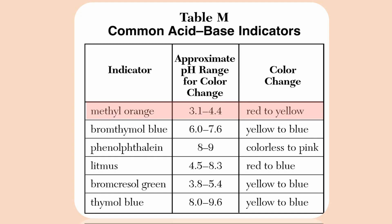According to Reference Table M, methyl orange, which is the indicator used in Sample A, has a pH range of 3.1 to 4.4, going from the color red to the color yellow. Bromthymol blue, which is the indicator contained in Sample B, has a pH range of 6.0 to 7.6, going from the color yellow to blue.